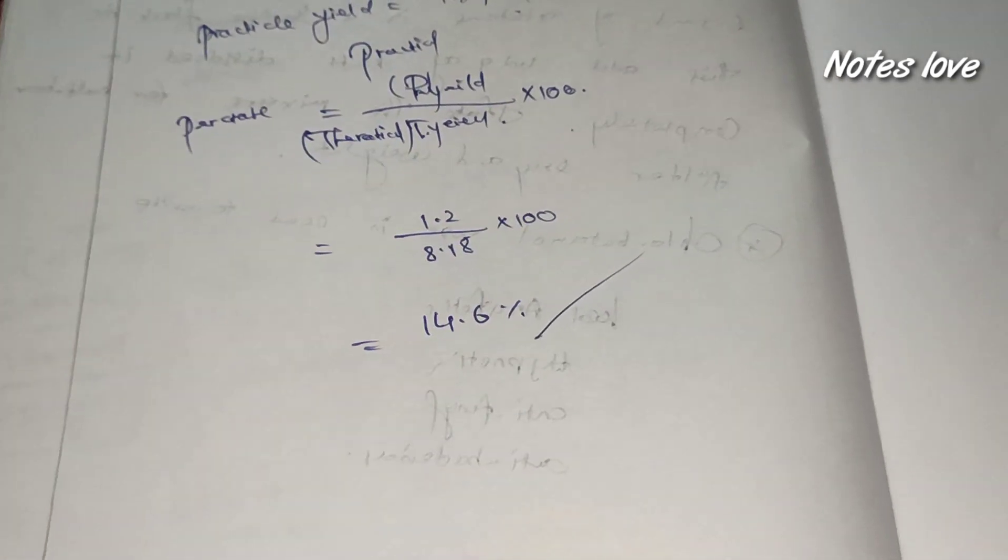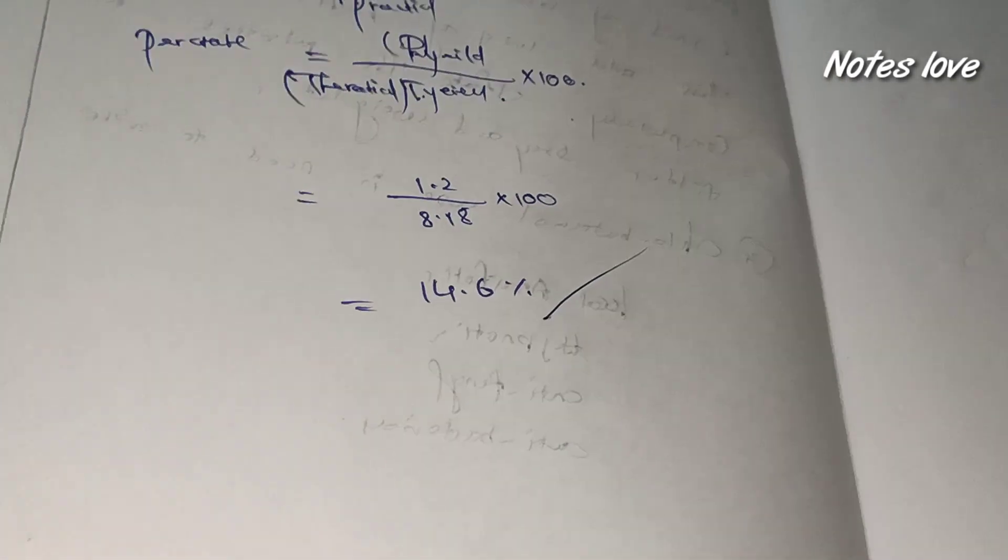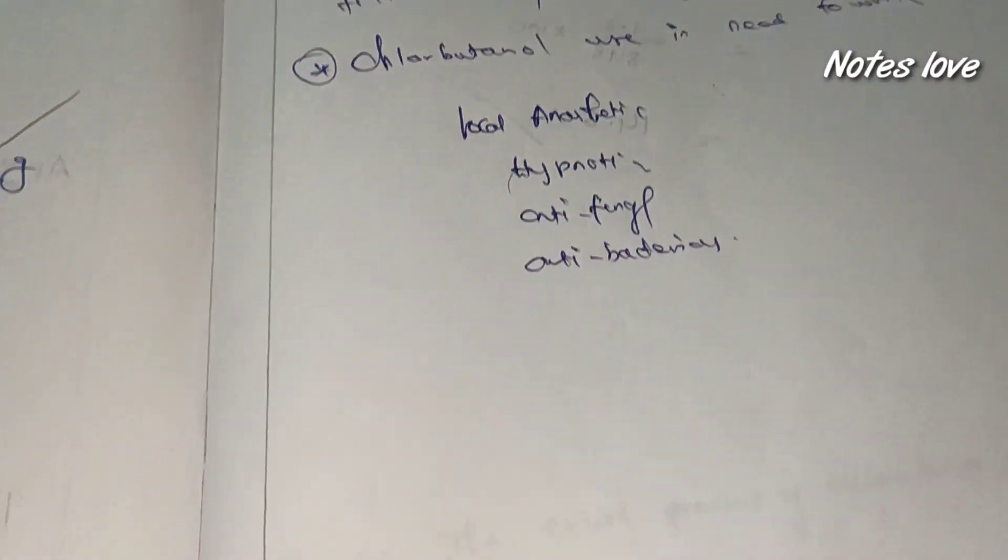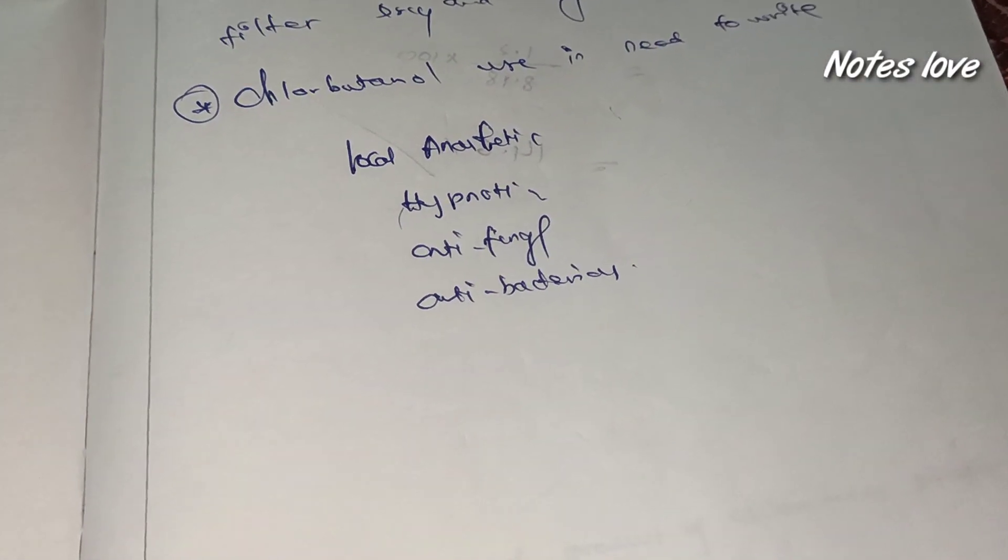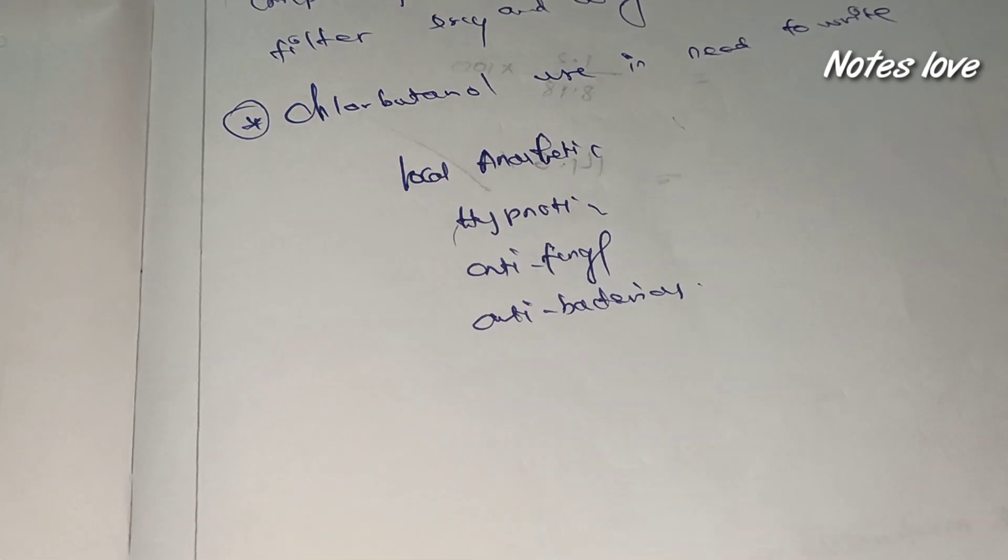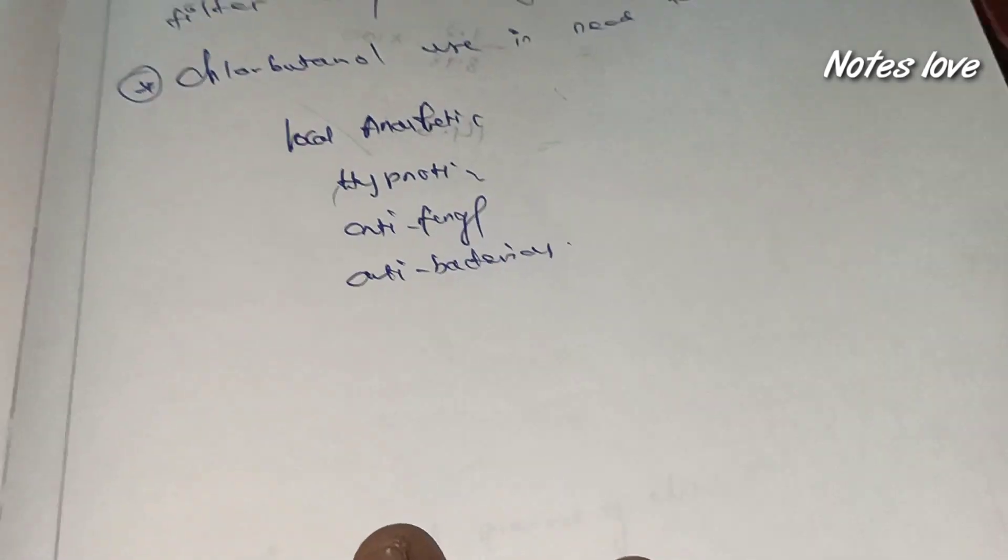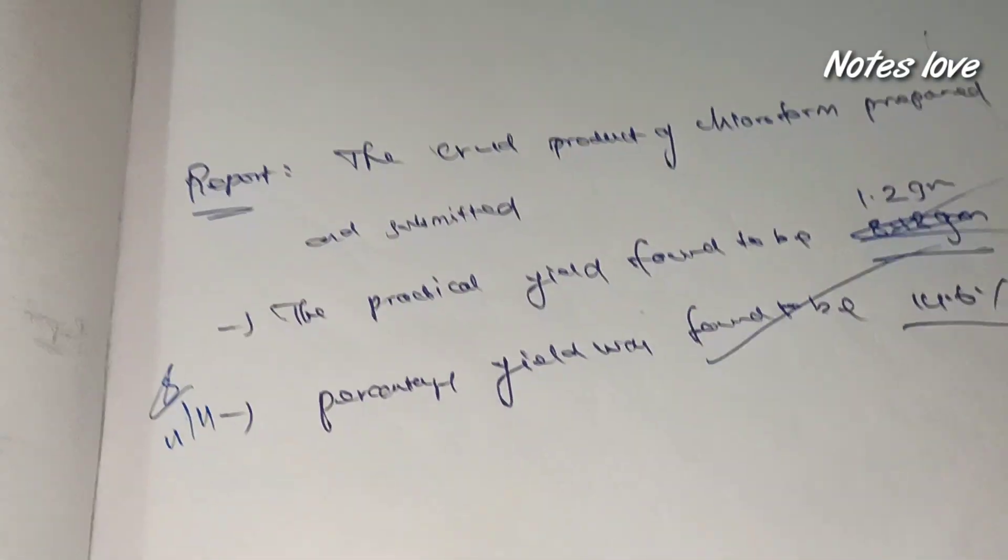What are the uses of chlorobutanol? It's a local anesthetic, hypnotic, antifungal, and antibacterial. Now how to write the report? If a crude product of chloroform prepared submitted, the practical yield was found to be 1.2.